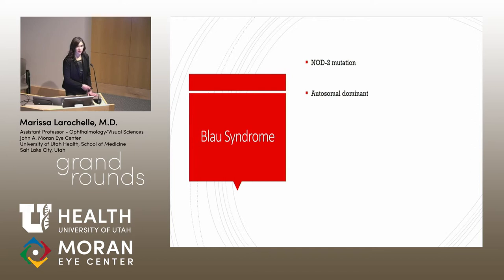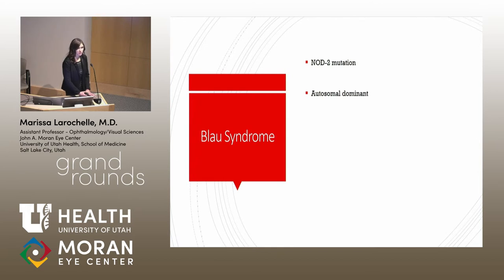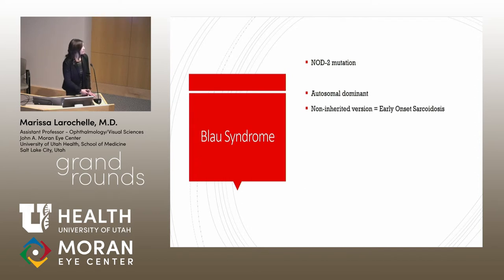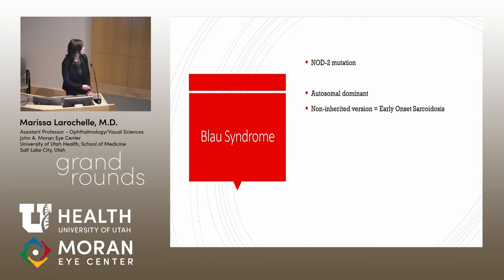Blau syndrome is caused by a mutation in NOD2, which codes for a protein involved in immune cells such as dendritic cells and monocytes. It is inherited in an autosomal dominant fashion. However, there is a non-familial version known as early-onset sarcoidosis, which occurs in those without a family history but involves a spontaneous mutation in the same NOD2 gene.